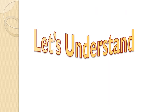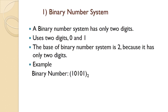Let's understand each one by one. First is binary number system. Binary number system has only two digits — 0 and 1. The base of the binary number system is 2 because it has only two digits. For example, a combination of 1s and 0s: 1, 0, 1, 0, 1. As we have already discussed it.